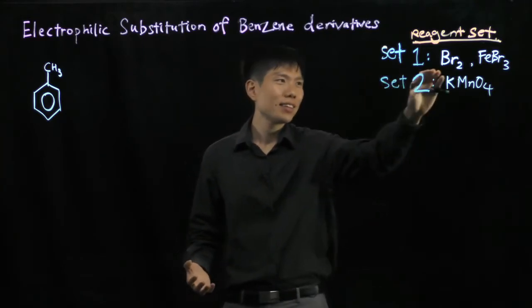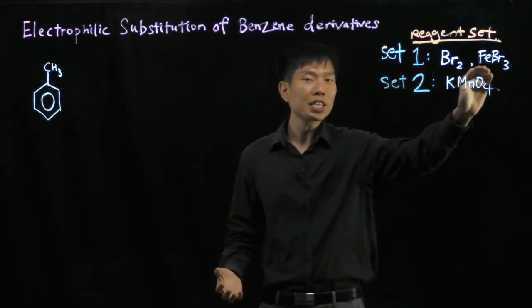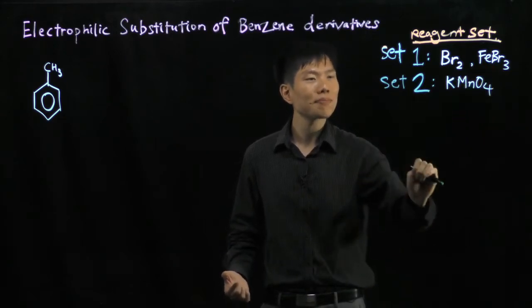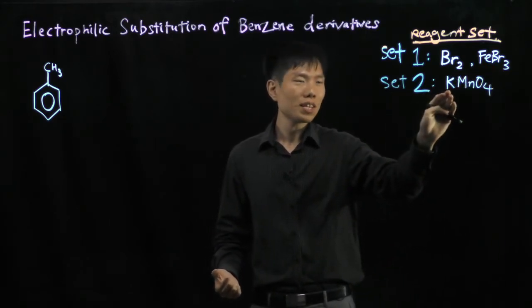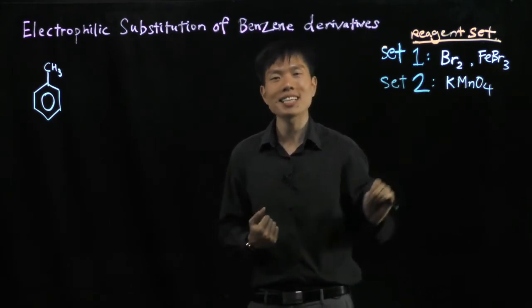Set 1: Bromine with a halogen carrier, FeBr3 anhydrous. Set 2: Potassium permanganate, a fantastic oxidizing agent.